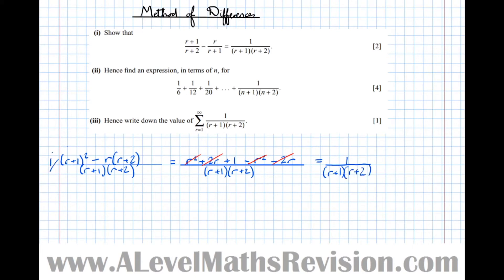So a nice easy start there, so that was part 1. Part 2, hence find an expression in terms of n for that there. So a 6th plus a 12th plus a 20th. So what we've got to do is try and find some similarity between this expression here and what we did in the first part.